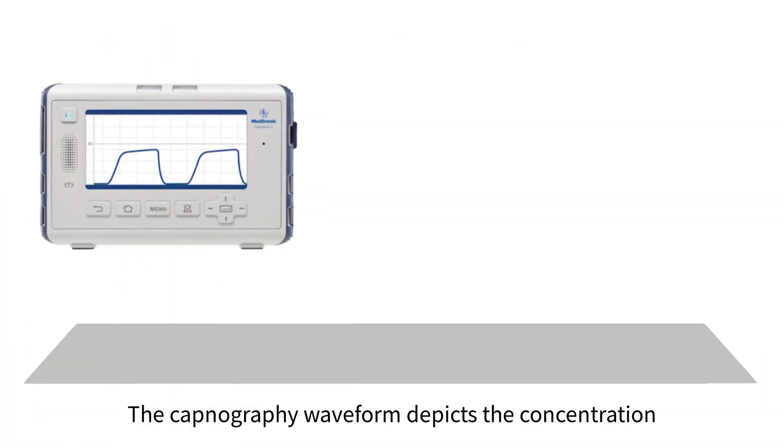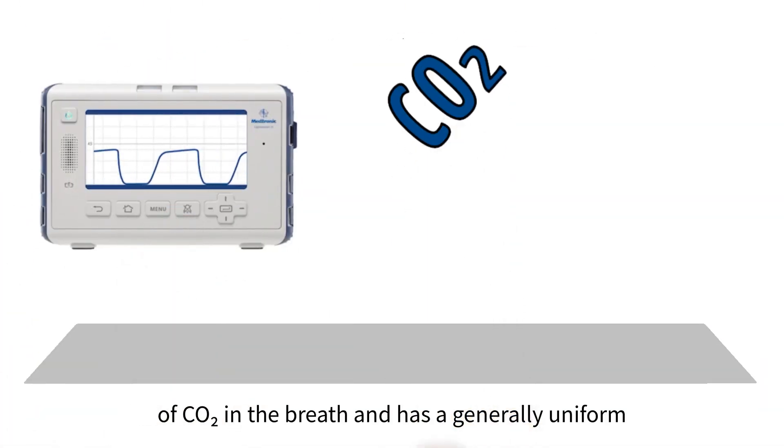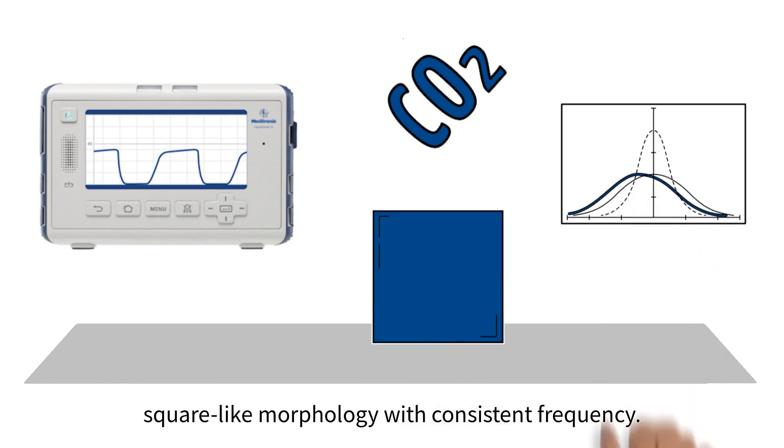The capnography waveform depicts the concentration of CO2 in the breath and has a generally uniform square-like morphology with consistent frequency.